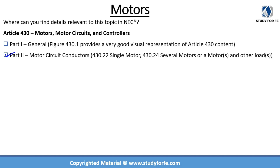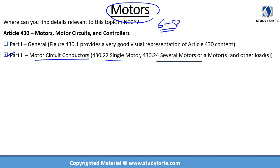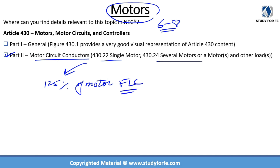Part 2 of Article 430 is titled Motor Circuit Conductors. Motors are unique in that they are almost completely inductive in nature with very low resistance, resulting in a very high inrush current — typically 6 to 8 times their full load current. I would like to draw your attention to two sections: 430.22 and 430.24. Section 430.22 deals with single motors, and the gist is that for a motor in continuous application, the conductor should not be sized less than 125% of motor FLC.